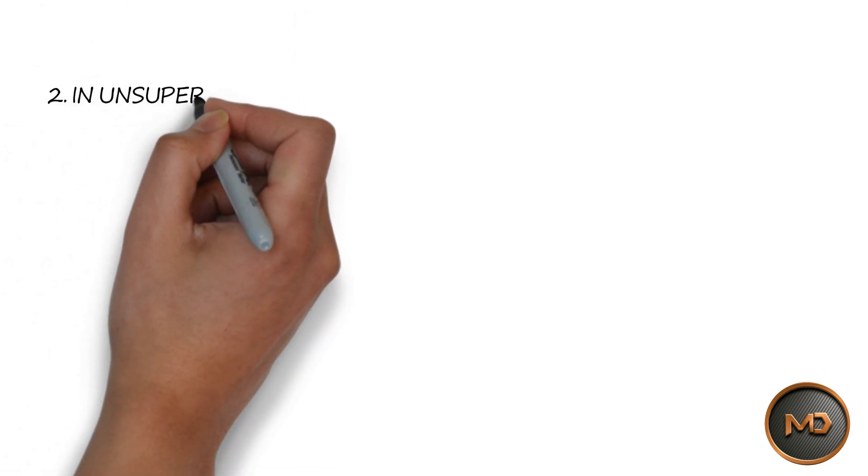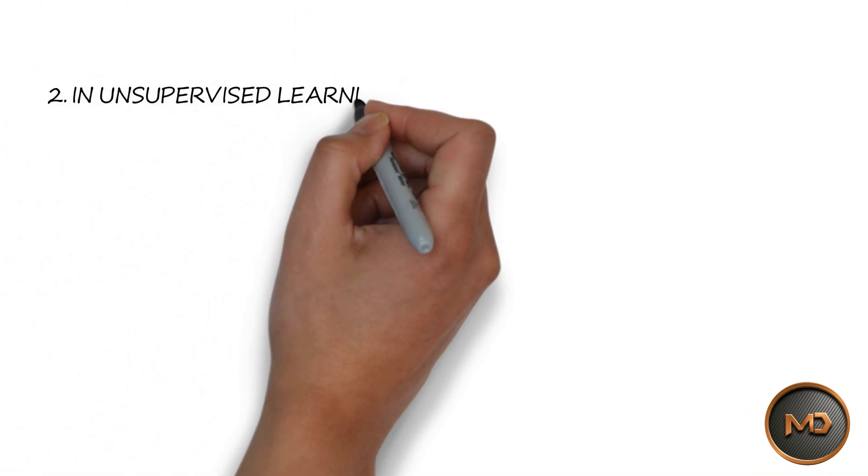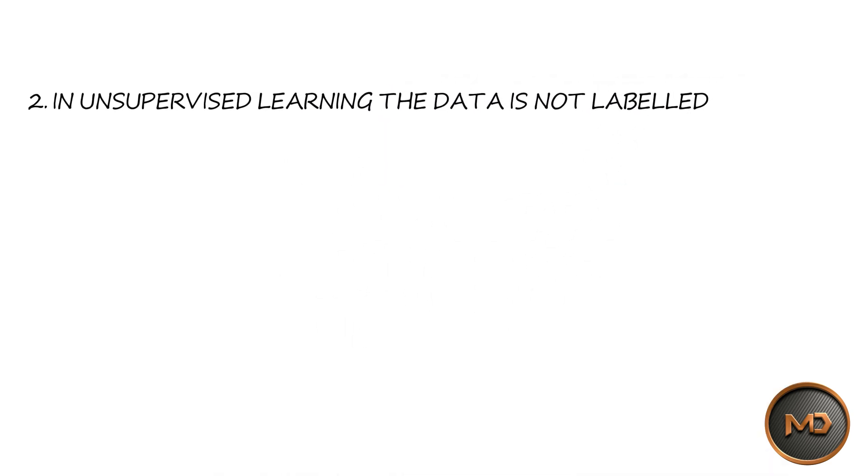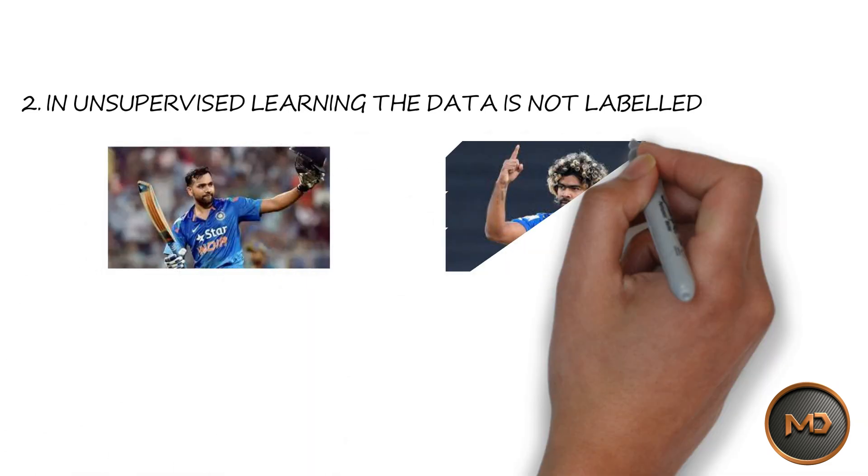In unsupervised learning the data is not labeled. For example, we all know that Rohit Sharma is a batsman and Lasith Malinga is a bowler. But how can a machine identify their roles?